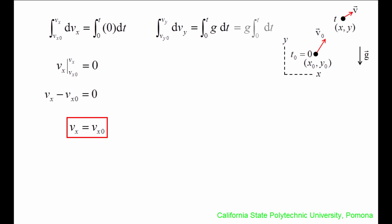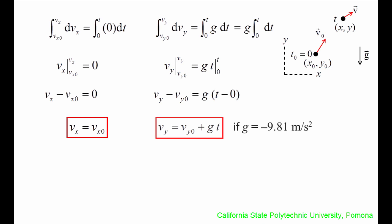For the right equation, g is constant and can be pulled out of the integral. The integral of dvy is vy and the integral of dt is t. Evaluating vy from the initial velocity to the final velocity gives vy minus vy0, and evaluating t gives t minus zero. After rearranging, we are left with vy is equal to vy0 plus g times t. This means the y-component of the velocity decreases with time since g is negative. Some people prefer to use positive 9.81 m/s² for g, in which case the equation would be vy0 minus g times t. You can use either equation as long as you are consistent with your signs.